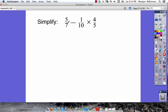Here we have 5 sevenths minus 1 tenth times 4 fifths. We know we need to multiply and divide before we add or subtract, so we're going to do the multiplication. We're going to do 1 tenth times 4 fifths.